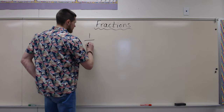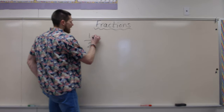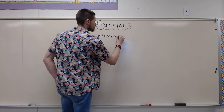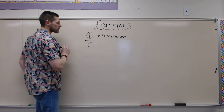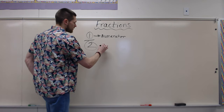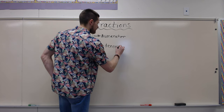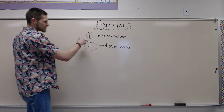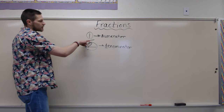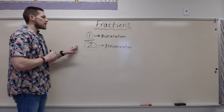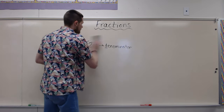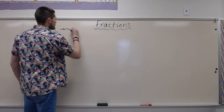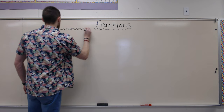If we take a fraction like one-half, this top number is called the numerator — that's on the top. This number down here, underneath the line, is called the denominator. If you think 'denominator down,' it's under or down below the line. So we have numerator on the top, denominator on the bottom. I'm going to rewrite this over here: one-half. This is the numerator. This is the denominator.